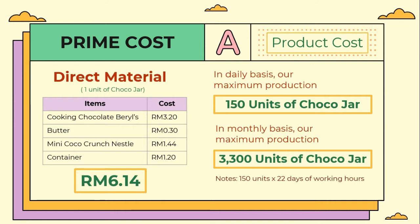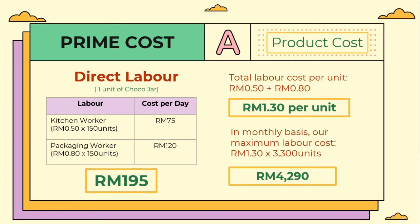On a daily basis, we can produce about 150 units of Chocojak, and we have 22 working days in a month. Therefore, our maximum production in one month would be 3,300 units of Chocojak. For direct labor, we decided to use the straight piece rate system, which is directly dependent on the total number of output that a worker is able to produce. On a monthly basis, our maximum labor cost would be 4,290 ringgit.